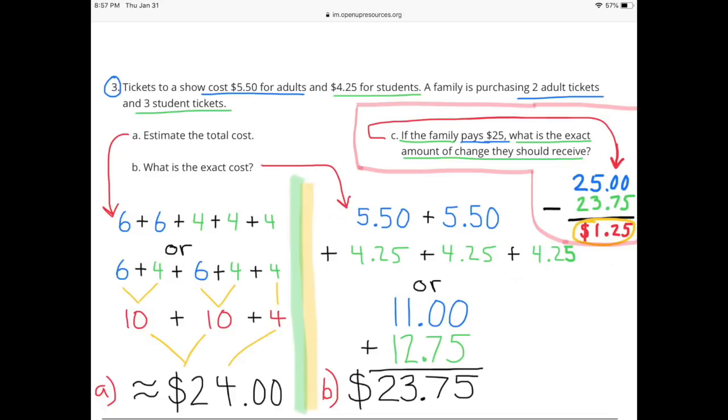Part B: What is the exact cost? $5.50 plus $5.50 plus $4.25 plus $4.25 plus $4.25 is the same as $11 plus $12.75, and that equals $23.75. The exact cost for the tickets is $23.75.